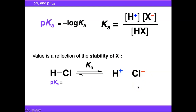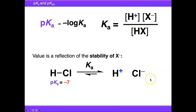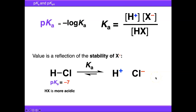Using hydrogen chloride as a real example: Cl⁻ is a stable anion, so you would expect the equilibrium to be tilted towards the right-hand side. This is reflected in the pKa value of hydrogen chloride, which is minus seven, indicating that the equilibrium is indeed tilted to the right. This tells us that HCl is strongly acidic — it's quite willing to give up H⁺ and Cl⁻ as a result.